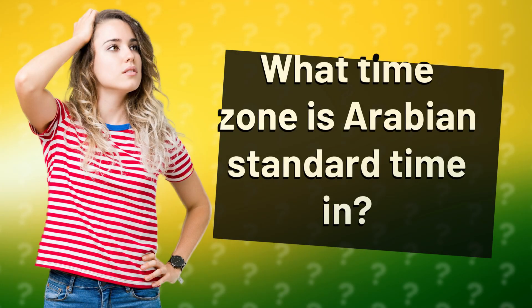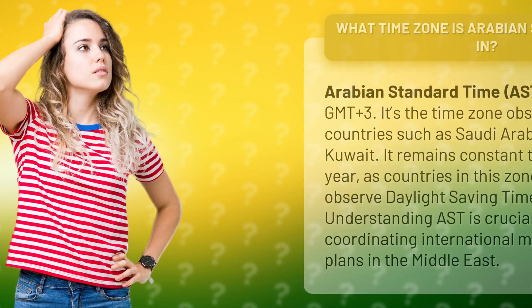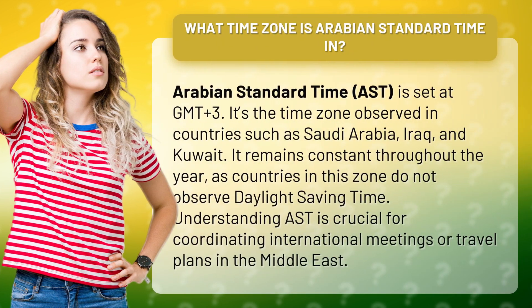What time zone is Arabian Standard Time in? Arabian Standard Time, AST, is set at GMT plus 3. It's the time zone observed in countries such as Saudi Arabia, Iraq, and Kuwait.